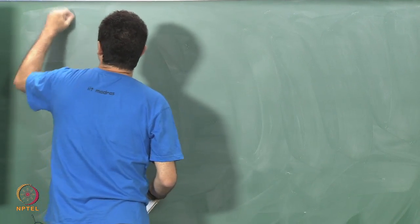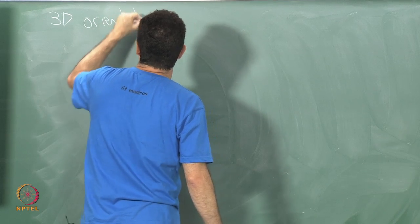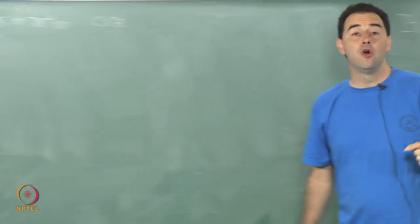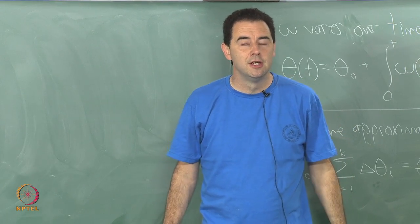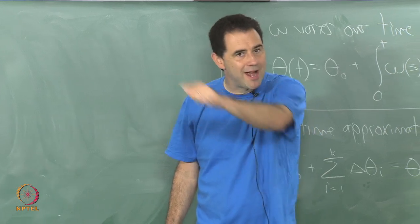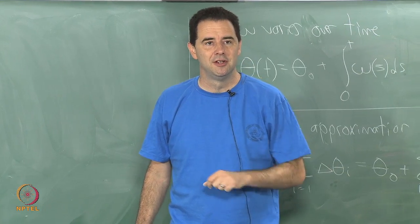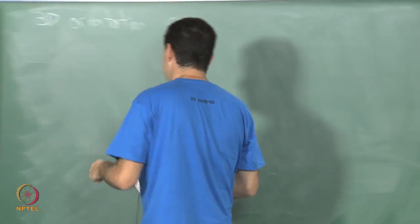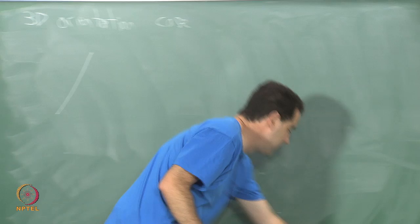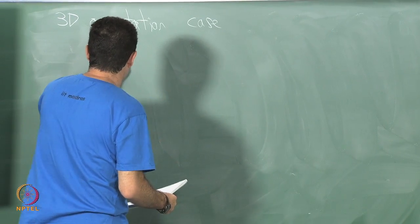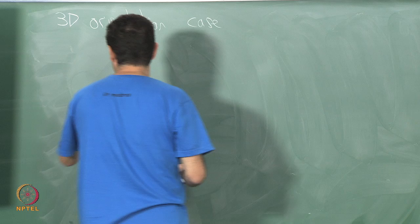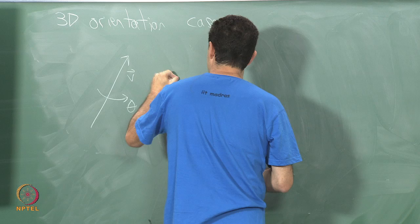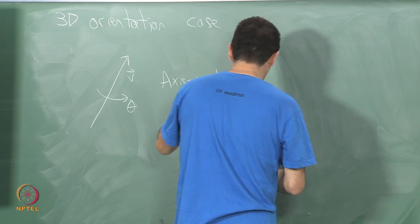The 3D case ends up being just as simple if you understand the principles we've covered on 3D rotations. Now let's look at the 3D orientation case. Remember Euler's rotation theorem: every 3D rotation can be represented as a rotation about some axis through the origin and some angle about that axis. There are two different ways depending on which way the axis is oriented, but we can reverse the axis.